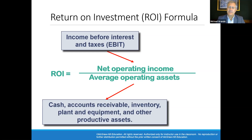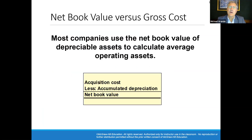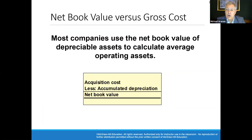As for the word 'average': we take the balances in these assets at the beginning of the year, add the assets at the end of the year, and divide by two to get an average. In addition, most companies use the net book value of depreciable assets — original cost less accumulated depreciation — to calculate average operating assets.